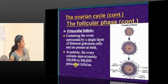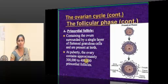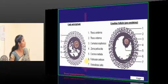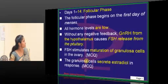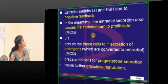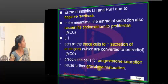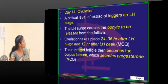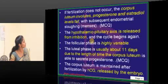At puberty, how many follicles will be left? We have already discussed the follicular phase — this is the maturation phase. The endometrium proliferates, theca cells increase androgens, and then ovulation surge occurs.